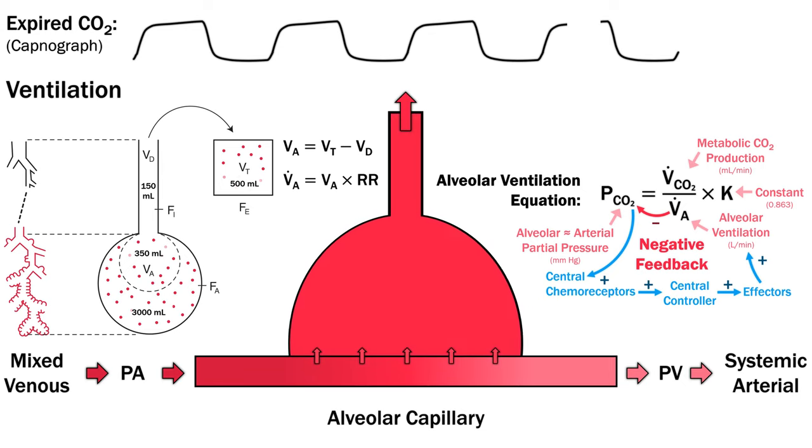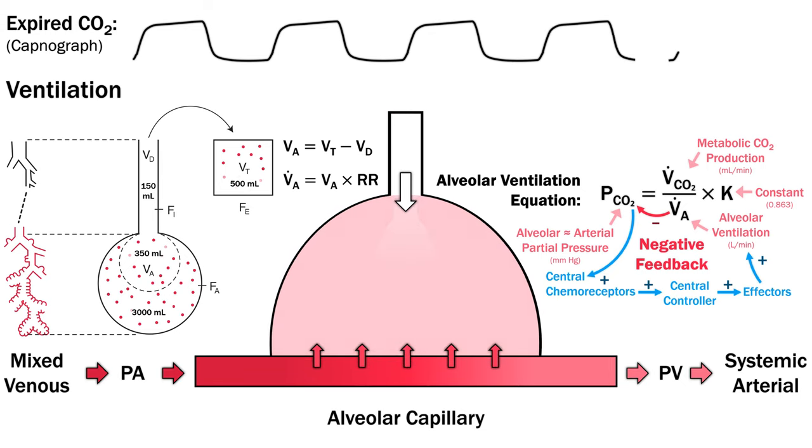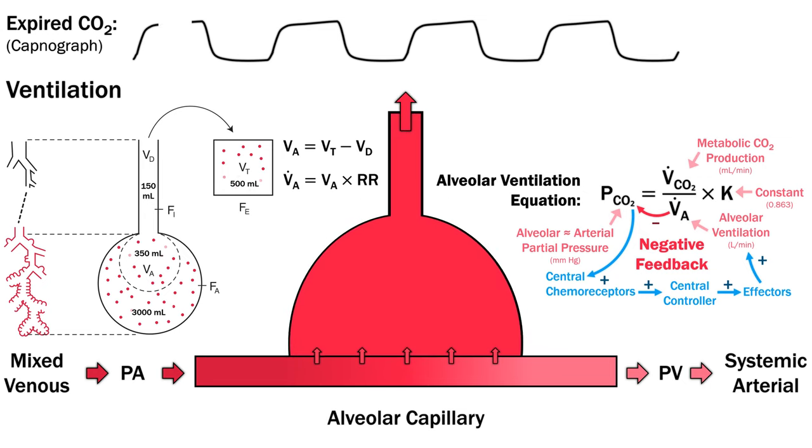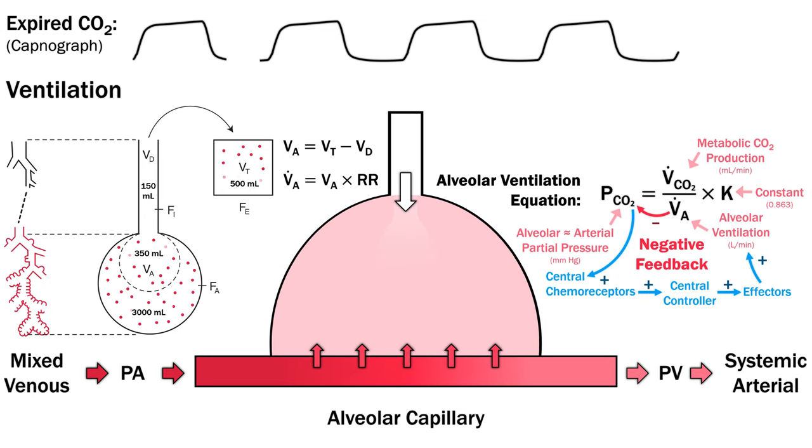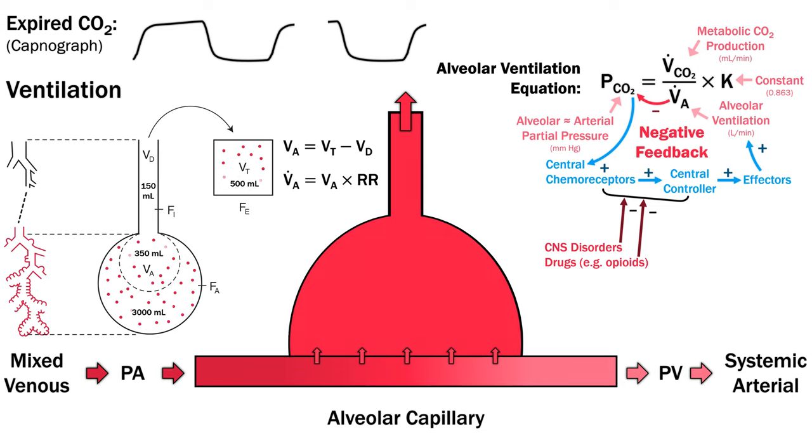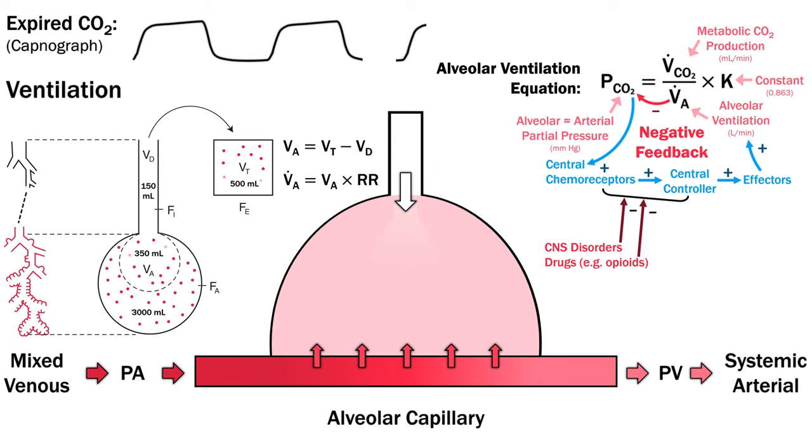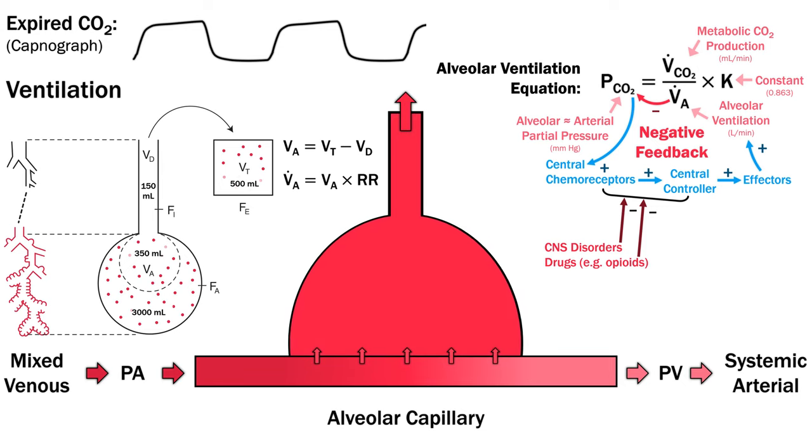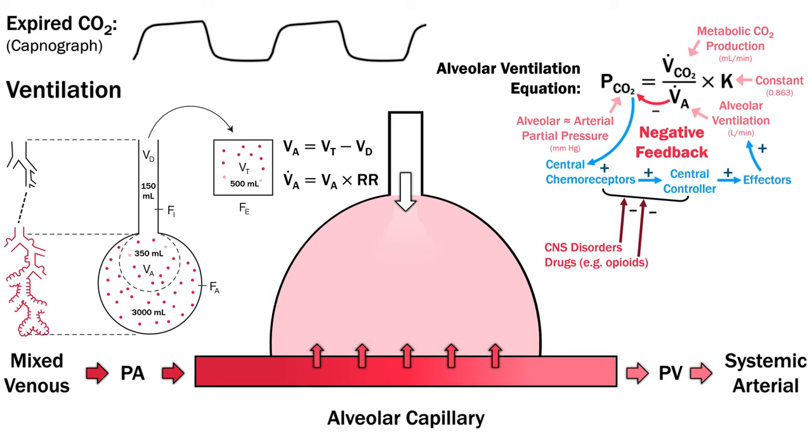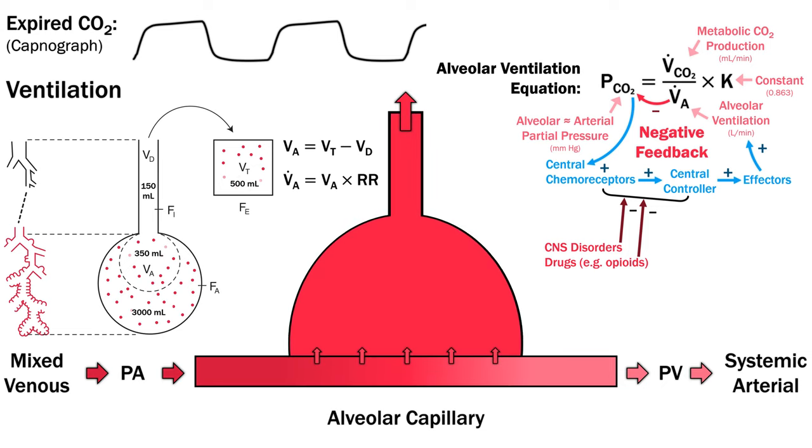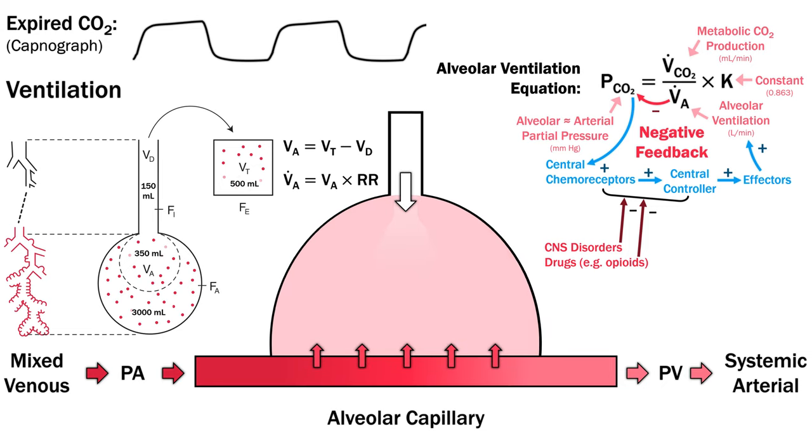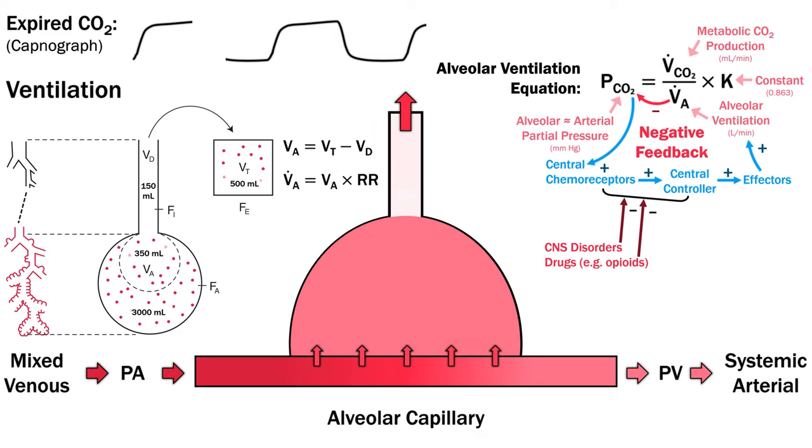We can also use this relationship to identify causes of hypoventilation. They can be broadly divided into central and peripheral. Central causes include brain stem injury or abnormalities such as Ondine's curse, central sleep apnea or severe coma. Drugs, specifically opioids and other CNS depressants that blunt the chemoreceptor response are another cause.